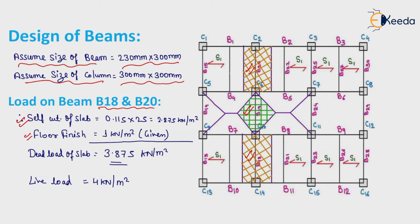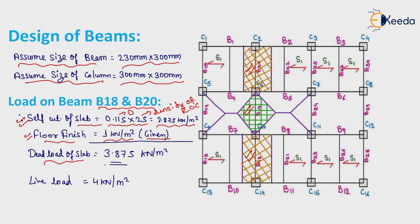According to this, we will further design. Therefore, self-weight of slab equals 0.115 × 25. Here, 0.115 is the overall depth of slab and 25 is the density of RCC. Its value will be 2.875 kN per meter square. Floor finish equals 1 kN per meter square, given in the question. Therefore, total dead load of slab equals 3.875 kN per meter square. Live load equals 4 kN per meter square.